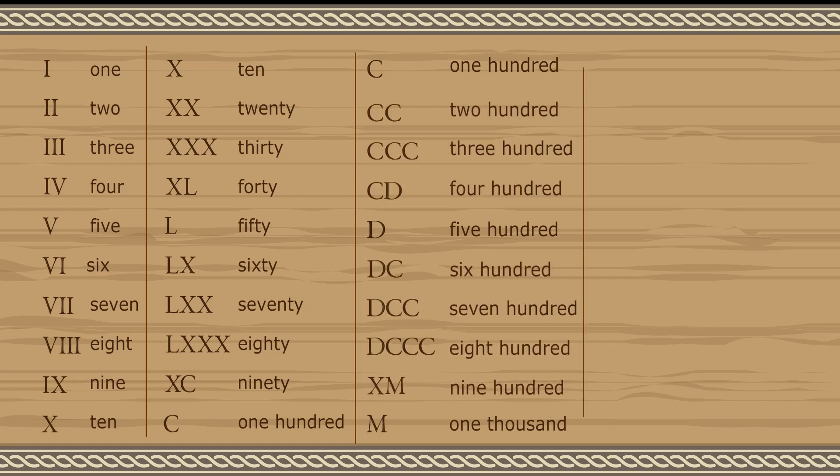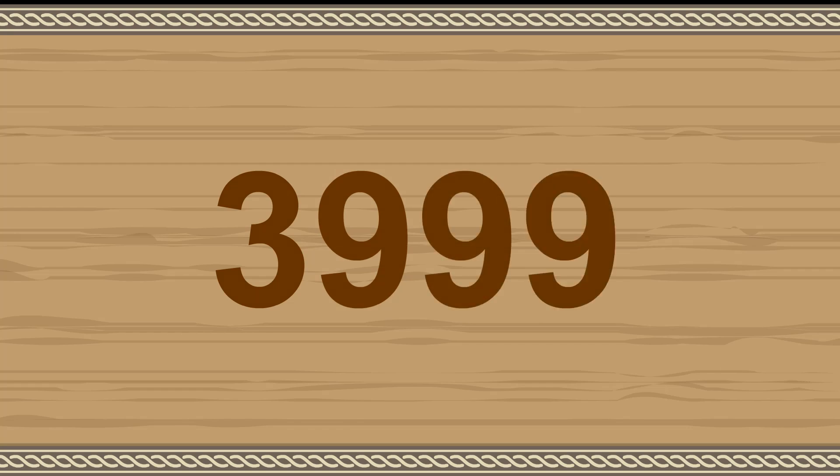In addition, the symbol M may be repeated up to 3 times to represent 1000, 2000, or 3000. These groups of numerals can be combined to form any number up to 3,999.